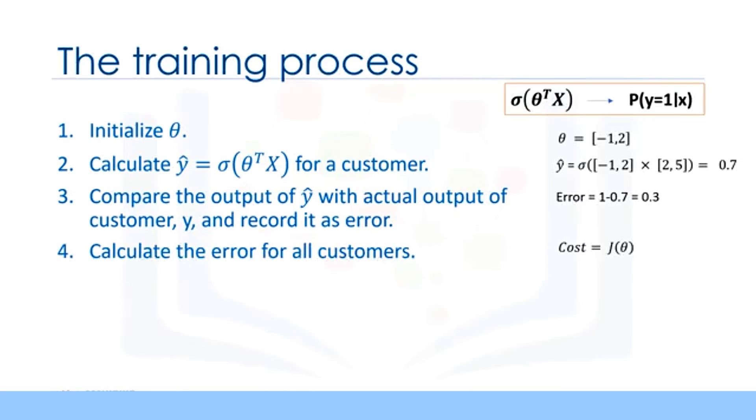Step 4. Calculate the error for all customers, as we did in the previous steps, and add up these errors. The total error is the cost of your model, and is calculated by the model's cost function. The cost function, by the way, basically represents how to calculate the error of the model, which is the difference between the actual and the model's predicted values. So, the cost shows how poorly the model is estimating the customer's labels. Therefore, the lower the cost, the better the model is at estimating the customer's labels correctly. And so what we want to do is to try to minimize this cost.